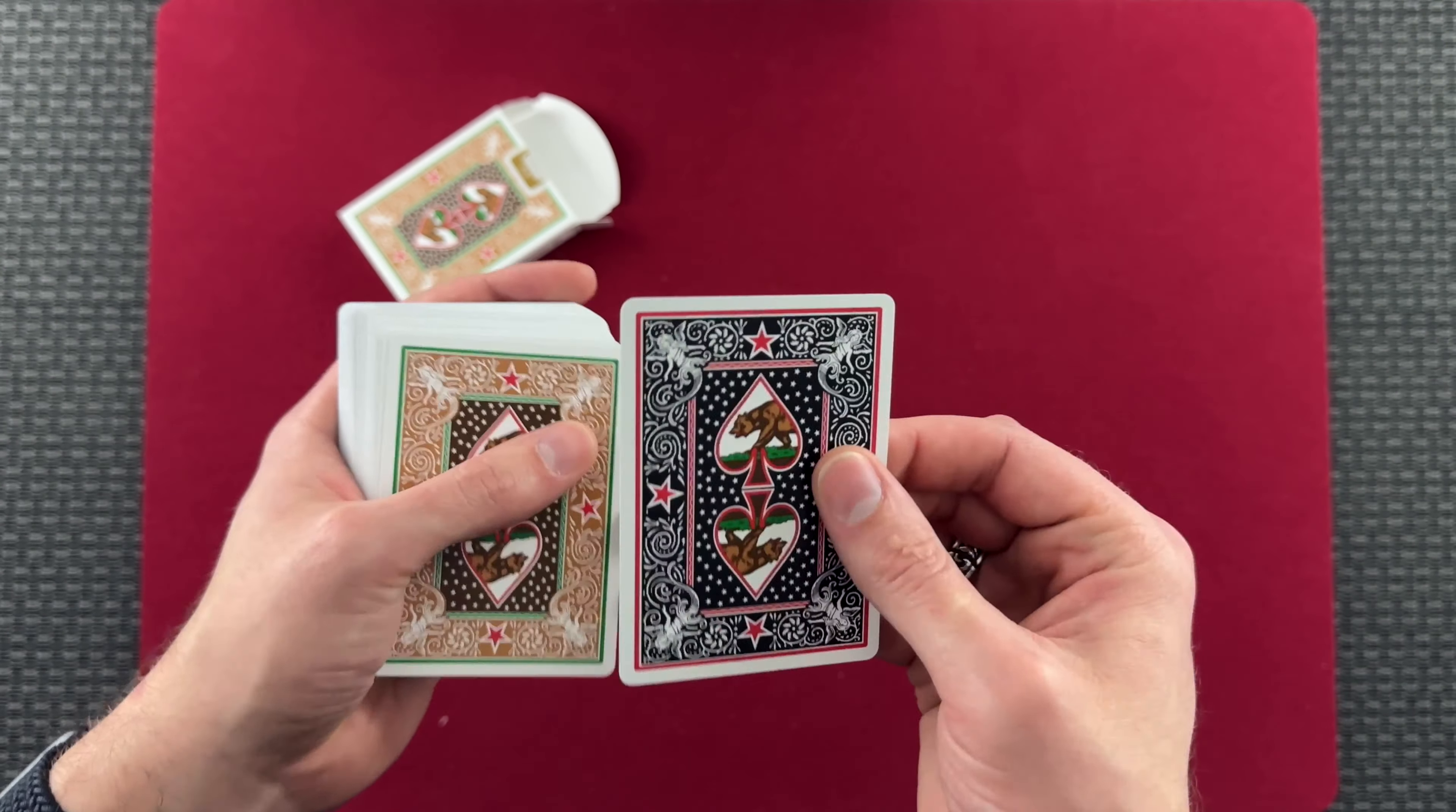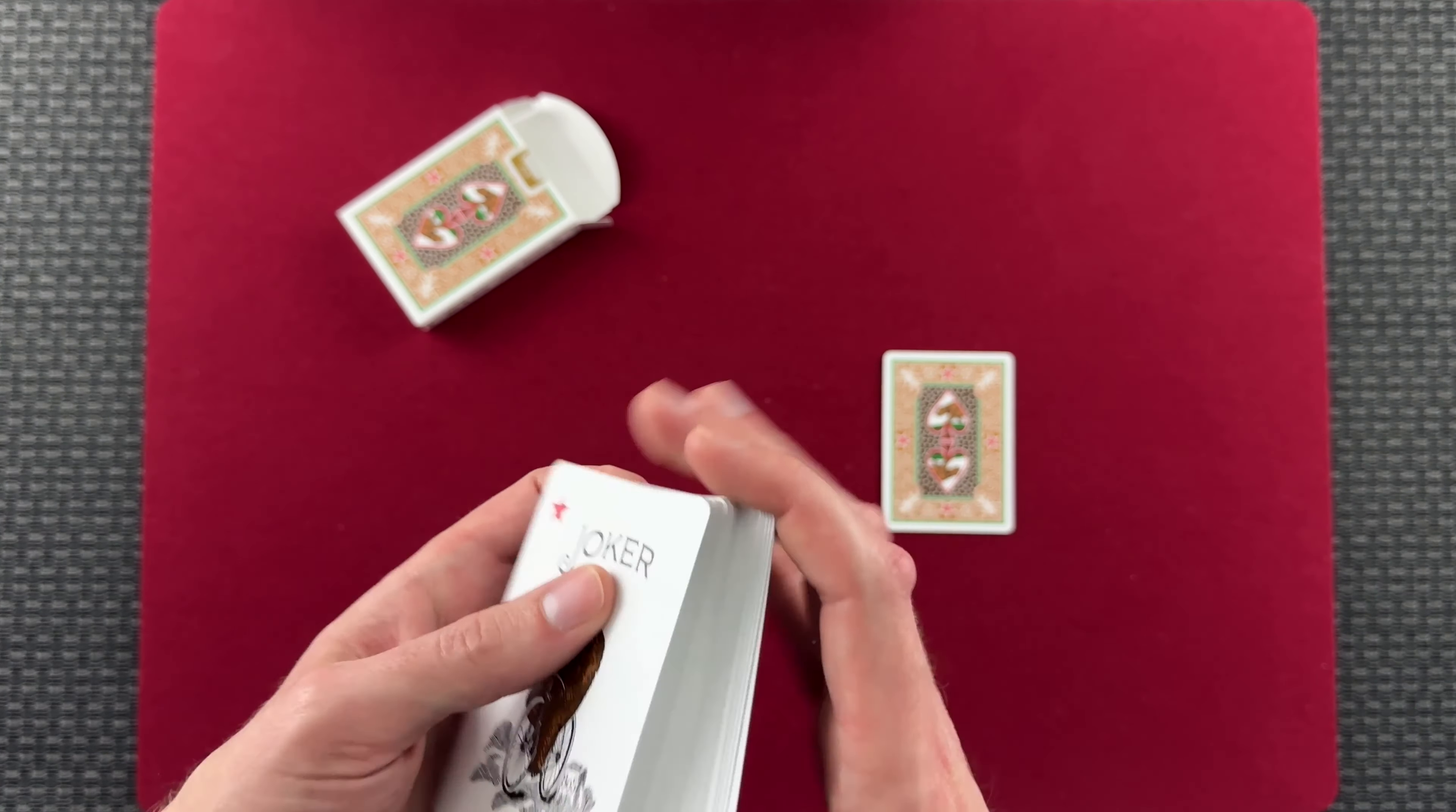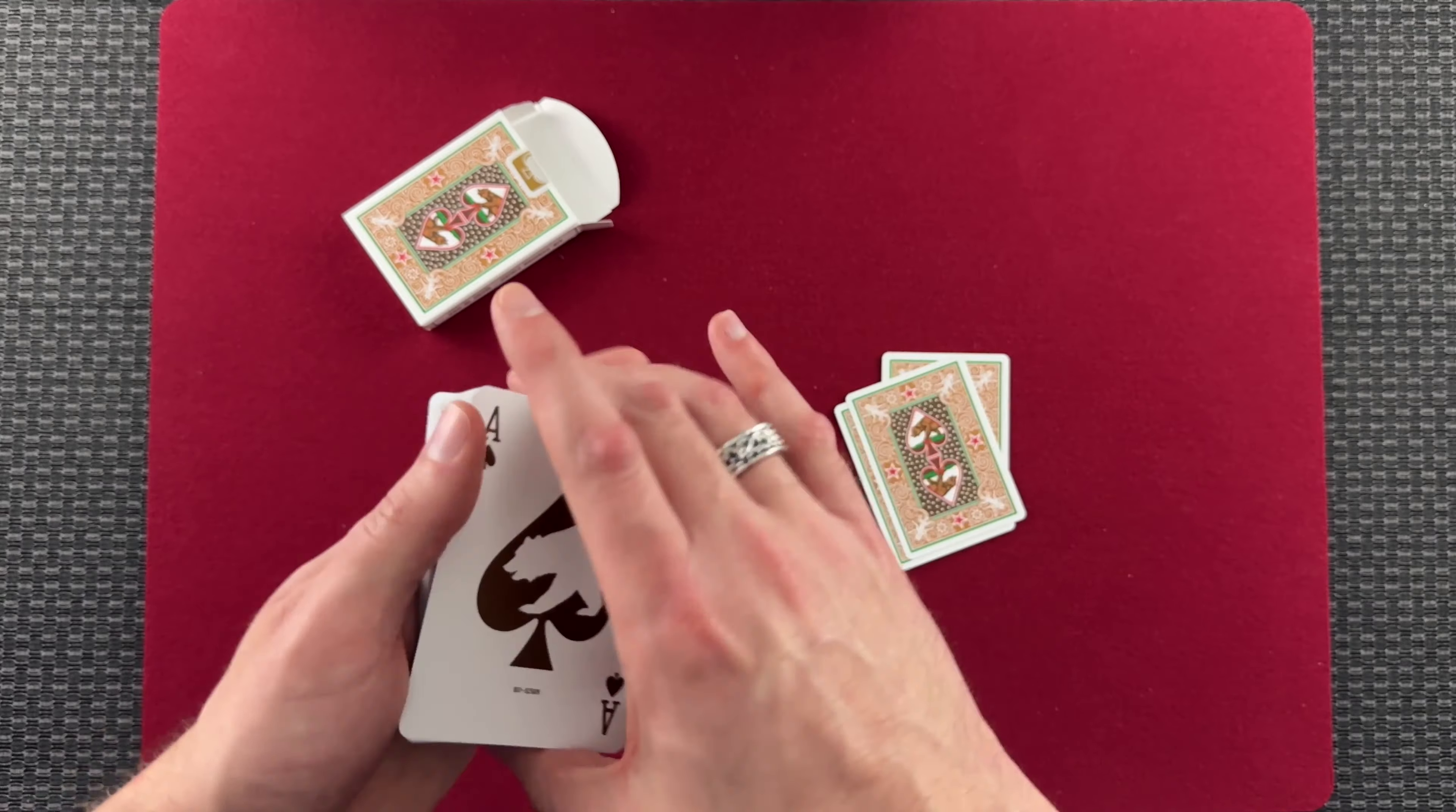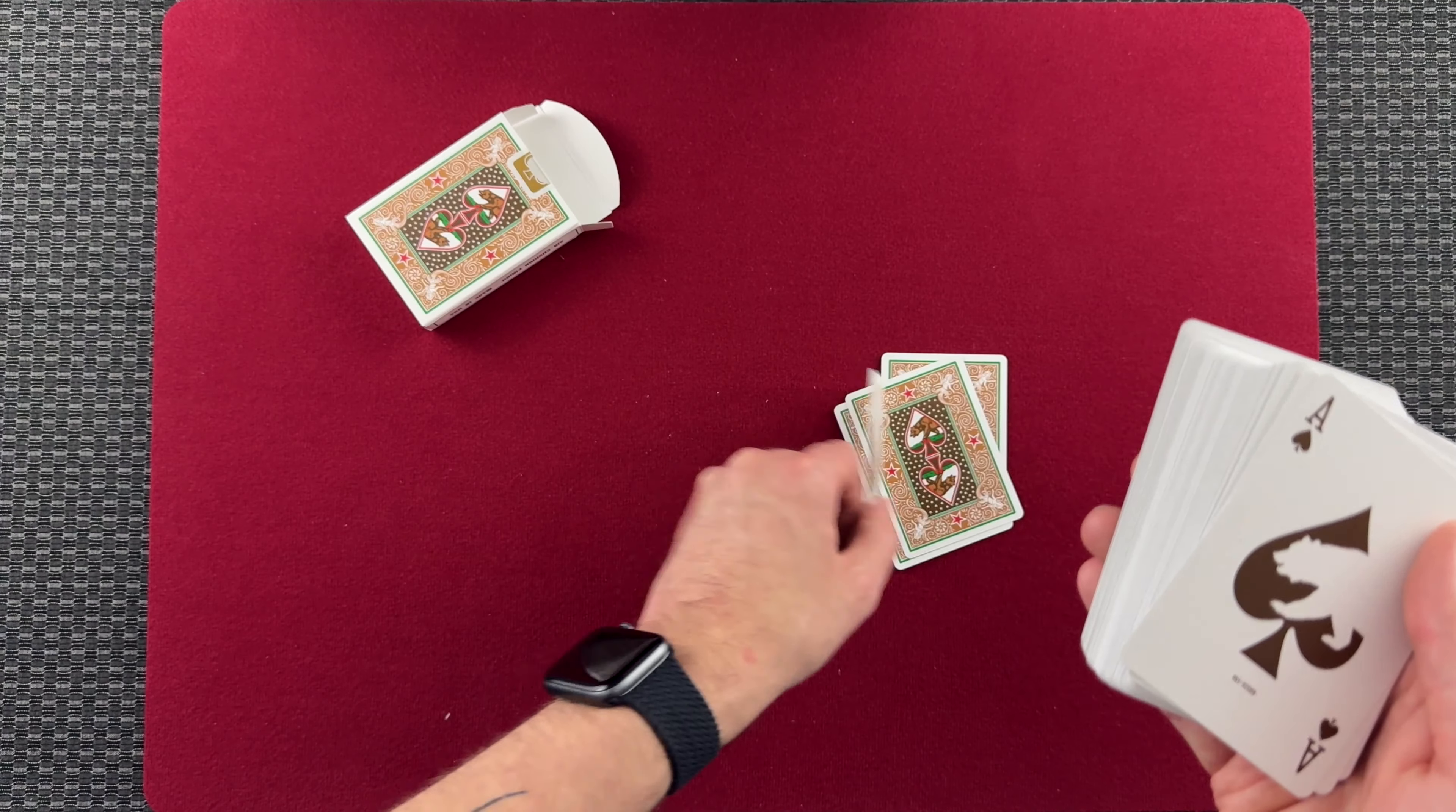So we have this double backer with a different colorway to start us off. And then that is our Ace of Spades. Maybe that's an extra duplicate Ace of Spades there. We have two identical Jokers here, and then we get into the cards themselves. So we've got an Ace of Spades that doesn't have the bear taken out of it. That's really unique. I like that.